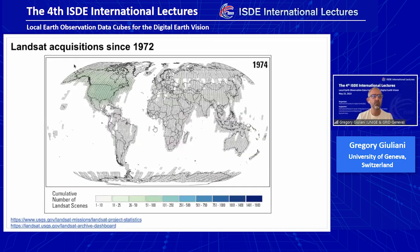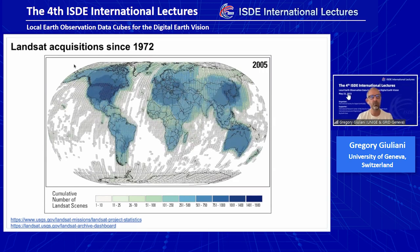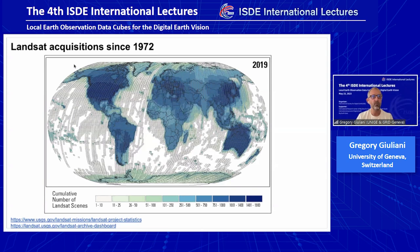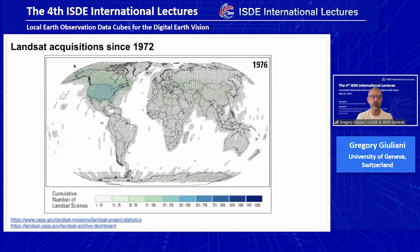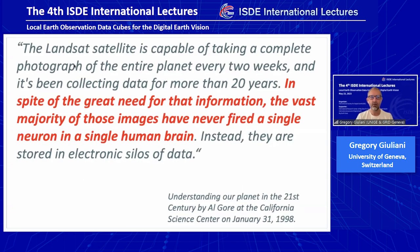In this animation you can see the number of acquisitions from Landsat since the beginning of the mission in 1972. We have millions of images captured by the Landsat program. Just to recall, when Al Gore set up the vision for Digital Earth in his inaugural speech, he was already talking about Landsat 20 years ago. He was saying that, in spite of the great need for that information, the vast majority of those images have never fired a single neuron of a single human brain around the world. It was really enlightening in terms of how we need to use that information generated out of these satellites.